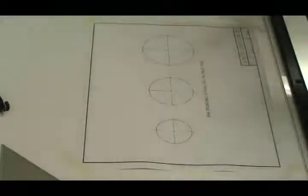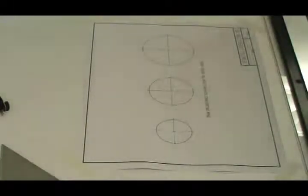In Geometric Construction Worksheet number 5, we're going to see how to draw octagons circumscribed about a circle.